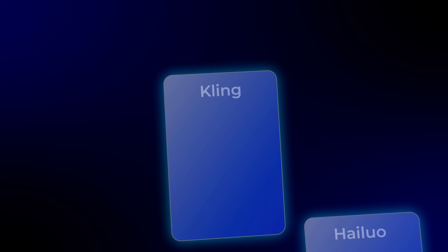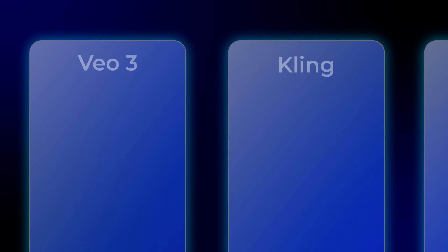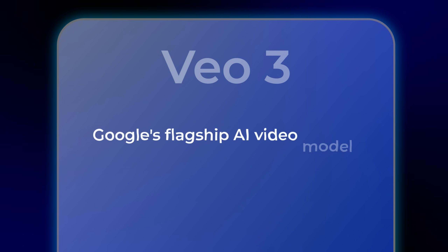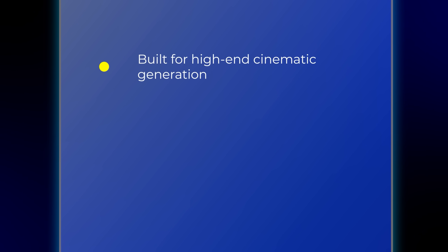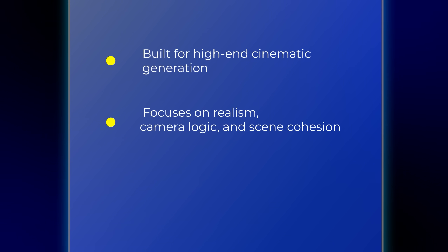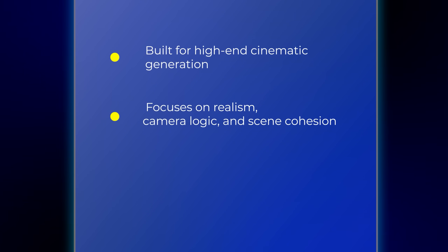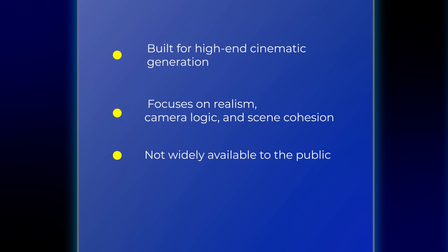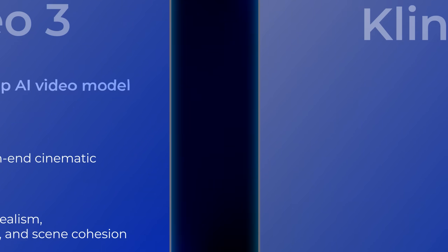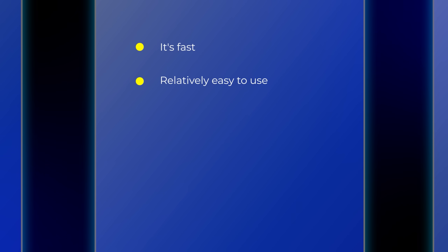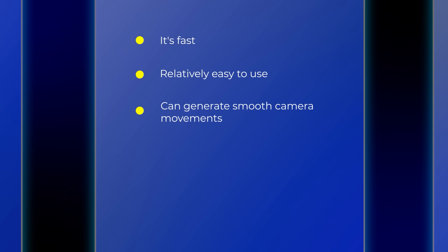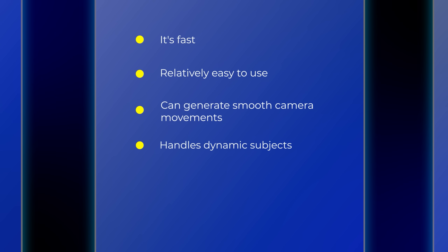For this challenge, we will have three models. First, we have VO3 — Google's flagship AI video model. It's built for high-end cinematic generation and focuses heavily on realism, camera logic, and scene cohesion. It's currently not widely available, and only select creators have access. Next is Kling. It's fast, relatively easy to use, and often gets compared to VO for its ability to generate smooth camera movements and dynamic subjects.